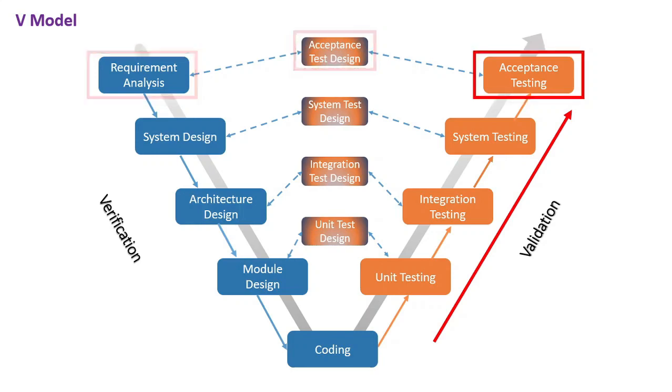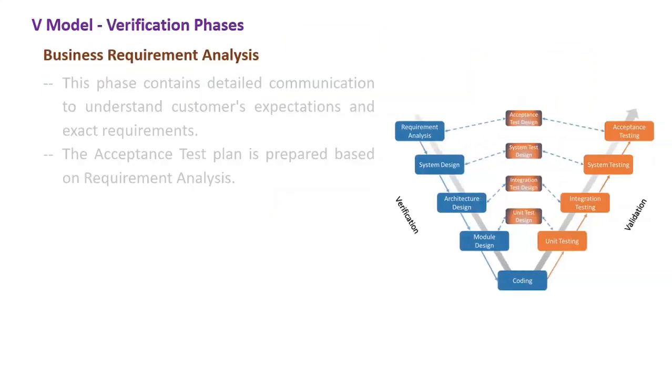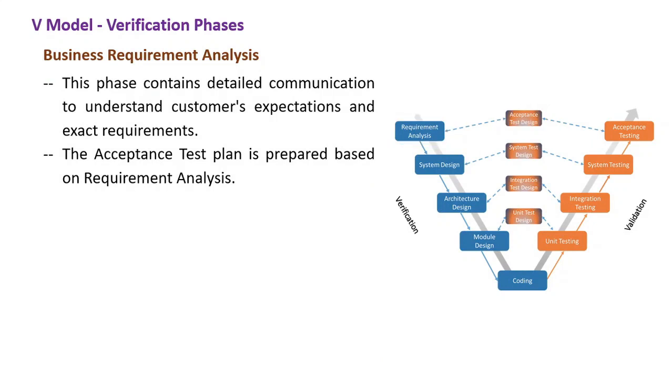Let us take the information on verification phases of V-Model. The first one is business requirement analysis. This is the first step where product requirements are understood from the customer's side. This phase contains detailed communication to understand customer's expectations and exact requirements.